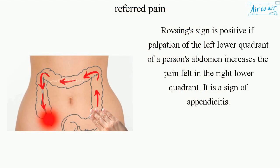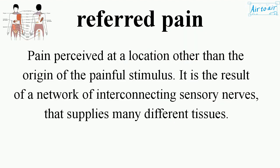Rovsing's sign is positive if palpation of the left lower quadrant of a person's abdomen increases the pain felt in the right lower quadrant. It is a sign of appendicitis.